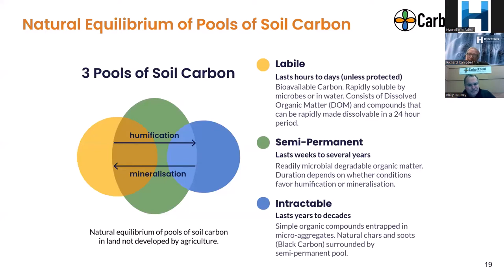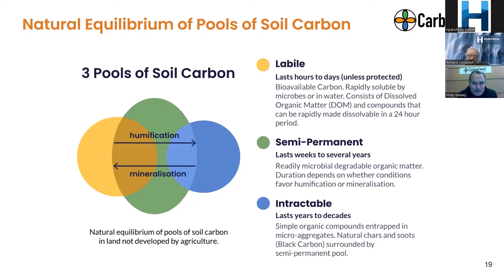These three pools of carbon are: the labile pool, shown in yellow, which only lasts a short period from hours to maybe a week in the soil; the semi-permanent pool, which goes from weeks to several years and is the largest pool; and the intractable pool, shown in blue, which lasts from years to decades and occasionally out to hundreds of years. The balance between mineralization — conversion to CO2 in the atmosphere — and humification — conversion to soil carbon — varies in every soil and with rainfall events and management. Under natural systems in the landscape it reaches a balance where a certain amount of humification and mineralization occur all the time.